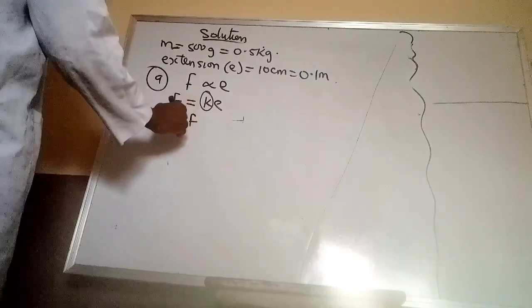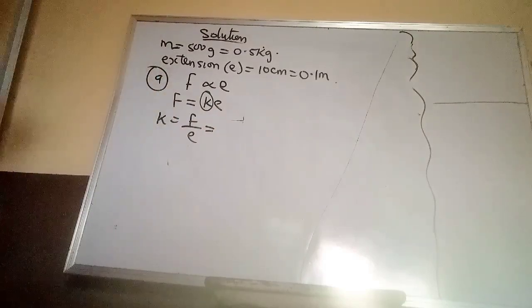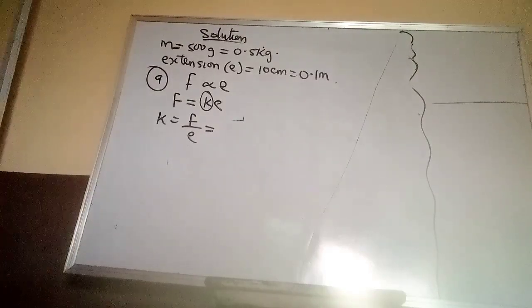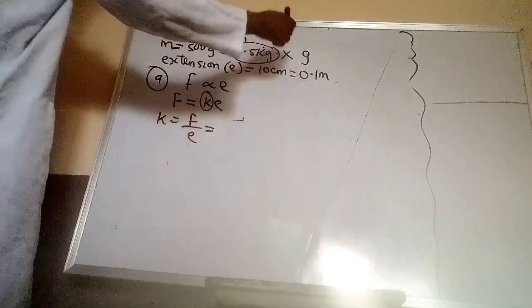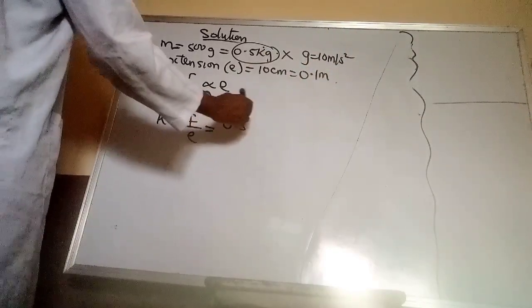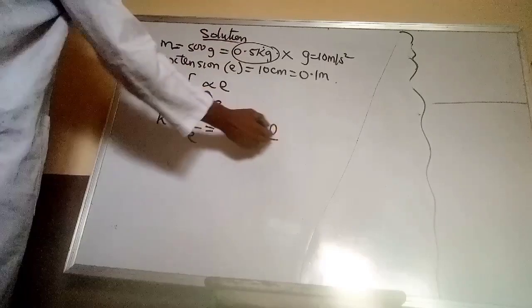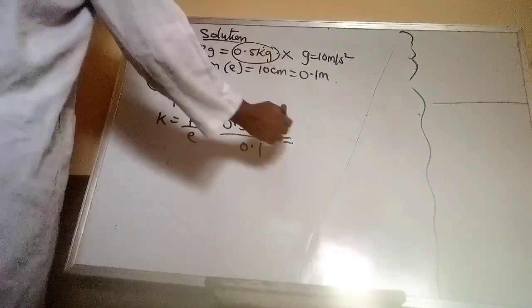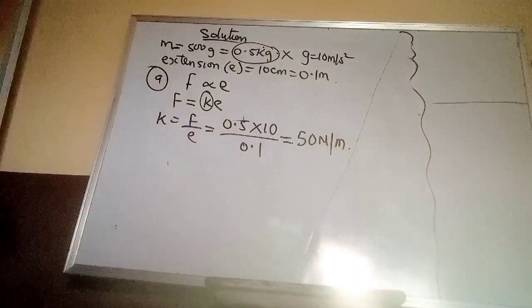That means K will be equals to F over E and the force here is the weight of the body. We convert this mass to weight by multiplying by acceleration of gravity G which is 10 m per second squared. So that means this will now be 0.5 multiplied by 10 which is used to convert this mass to weight all over extension 0.1. That will be 50 Newton per meter. That is the force constant.